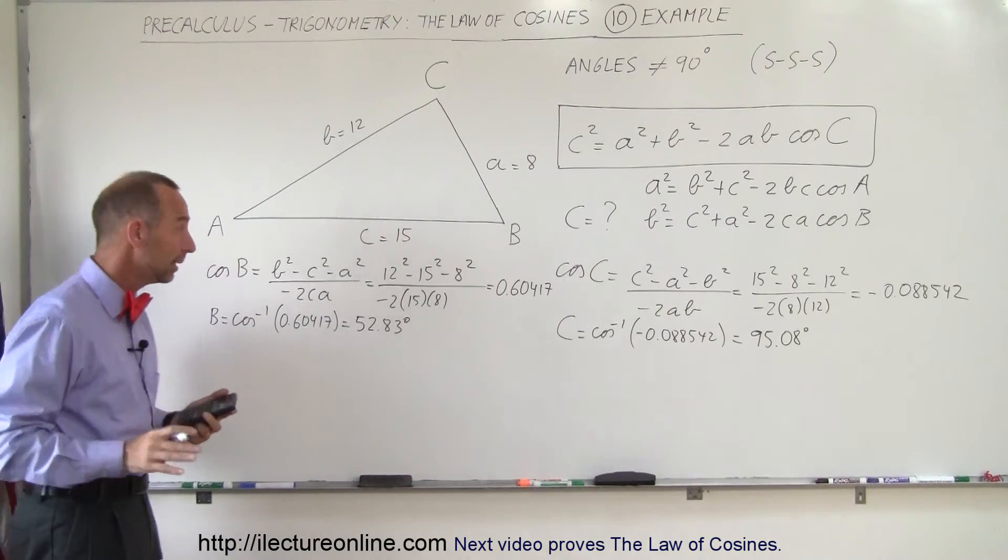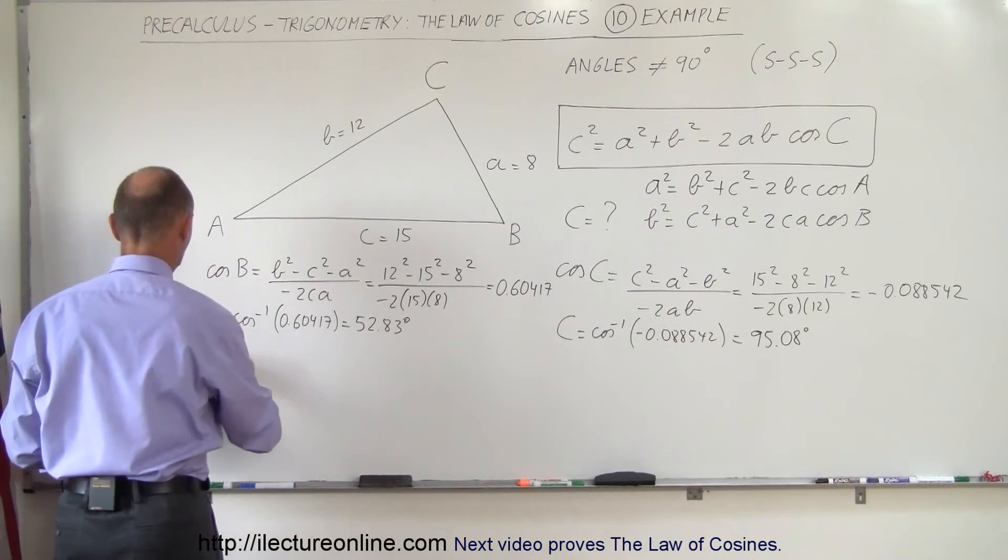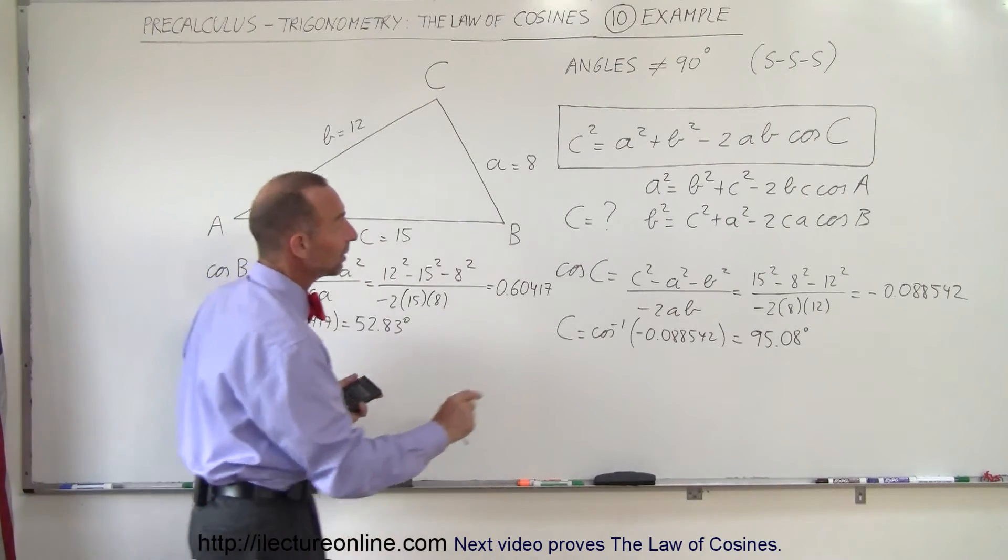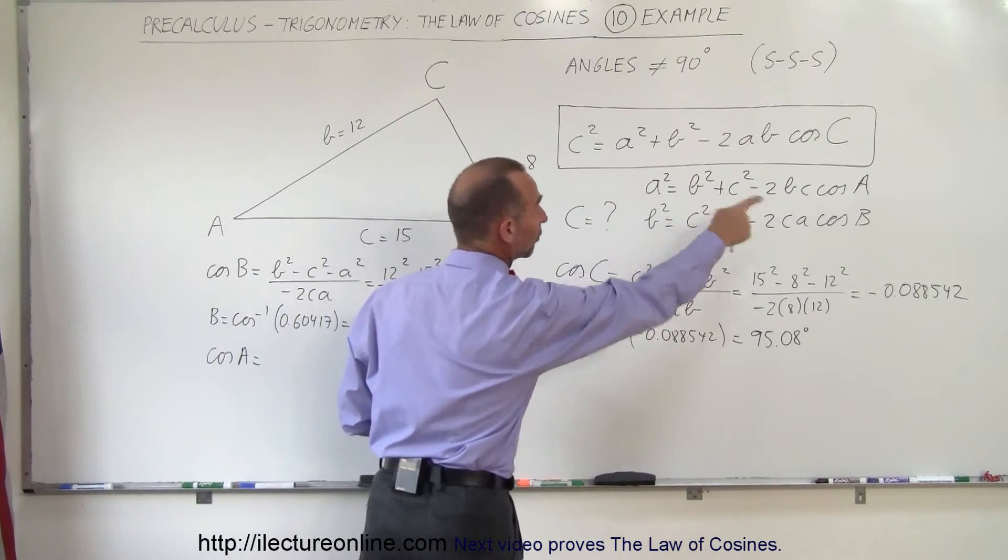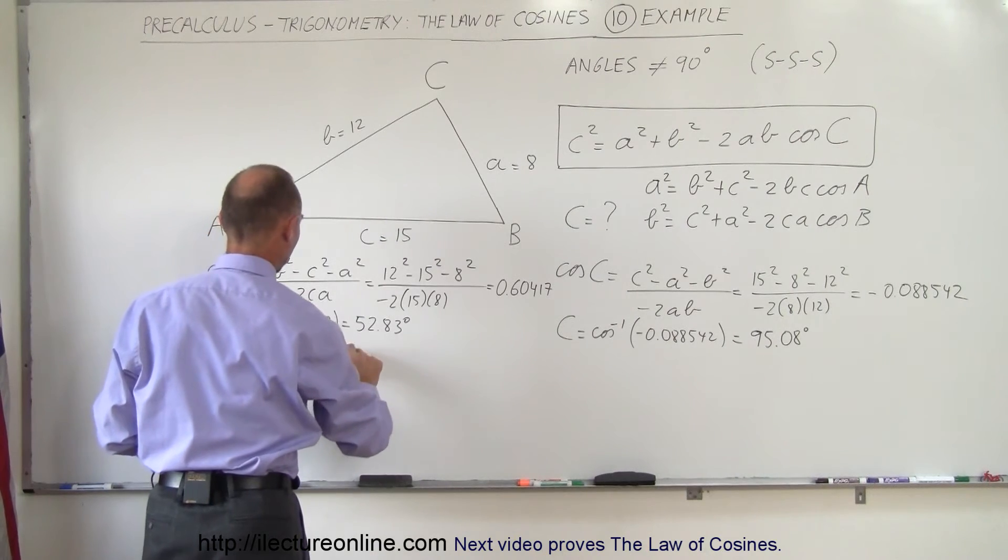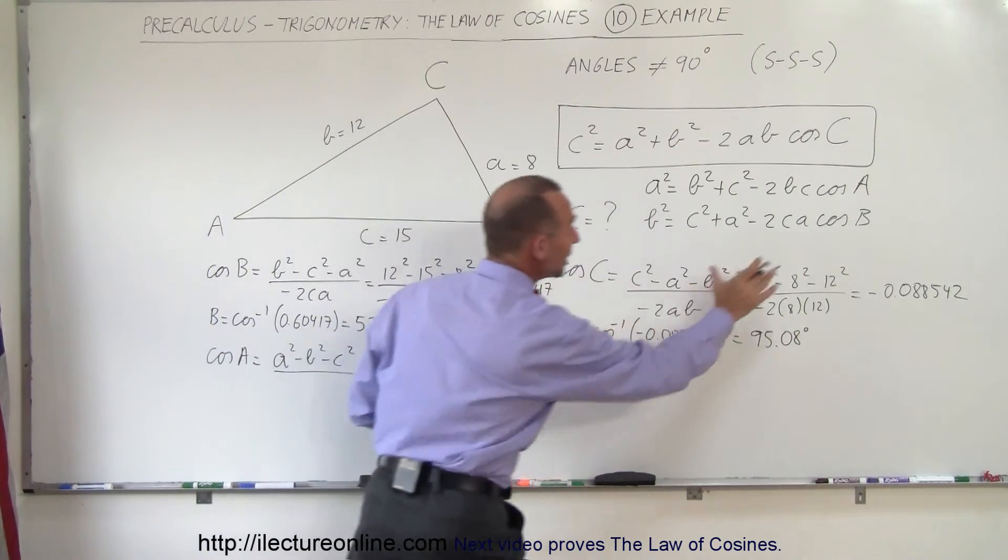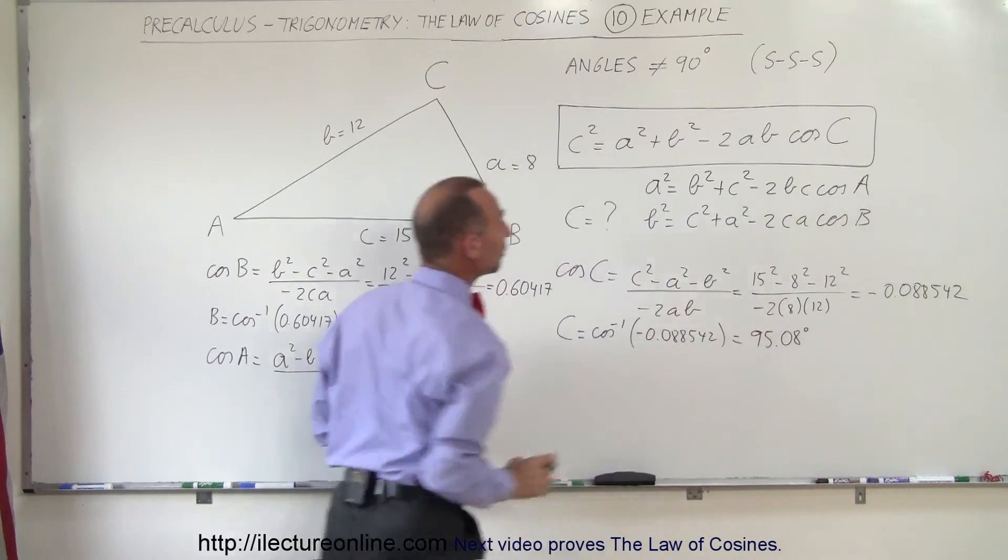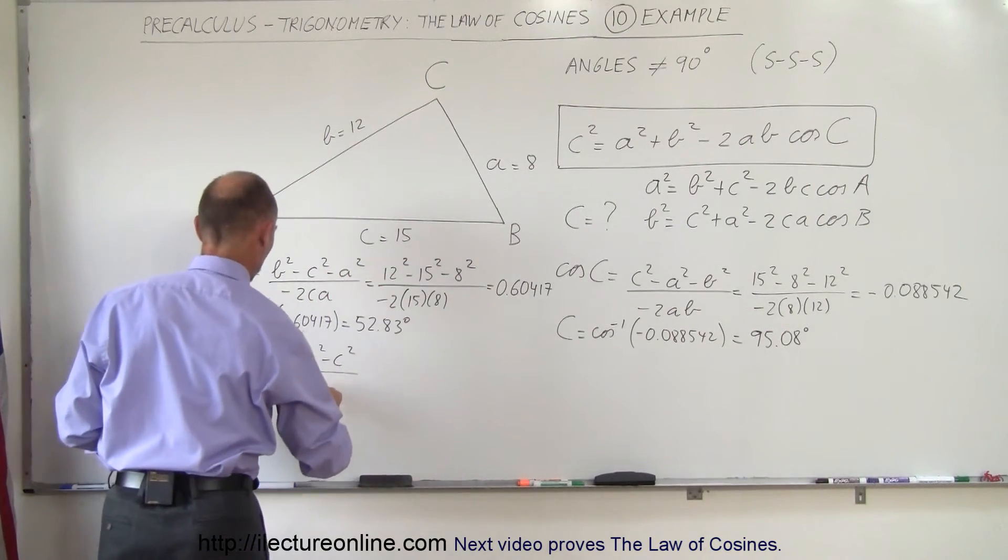And finally the third angle, angle A. So we have the cosine of A is equal to, now we take this equation right here and solve for the cosine of A. That's A squared minus B squared minus C squared, all divided by the coefficient here, minus 2BC.